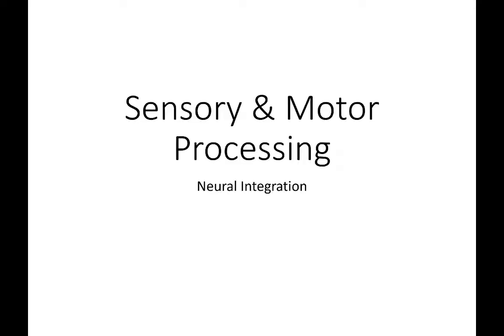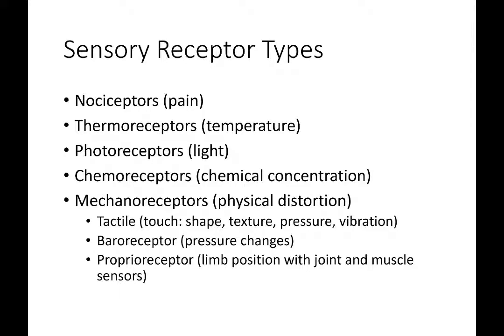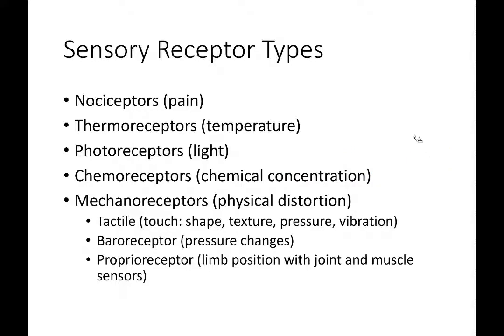Now onto sensory and motor processing, also known as neural integration. The types of sensory receptors we have are: nociceptors, which detect pain; thermoreceptors, which detect temperature; photoreceptors, which detect light; and chemoreceptors, which detect chemicals such as oxygen, carbon dioxide, or hydrogen ions (pH). Chemoreceptors are a general class — there would be a very specific receptor for oxygen, which is different from the one for carbon dioxide.